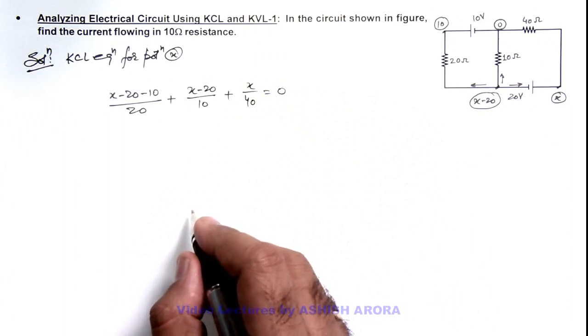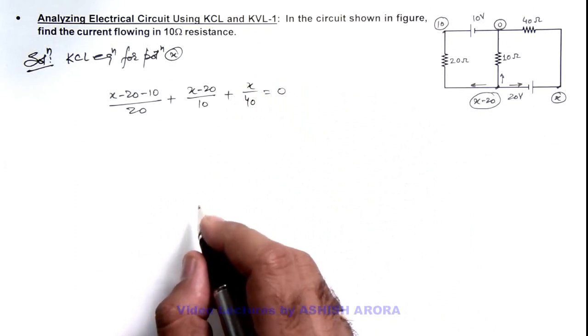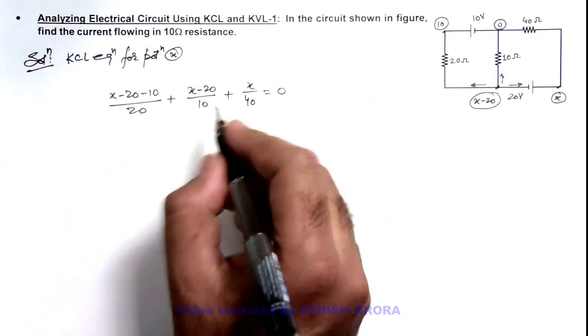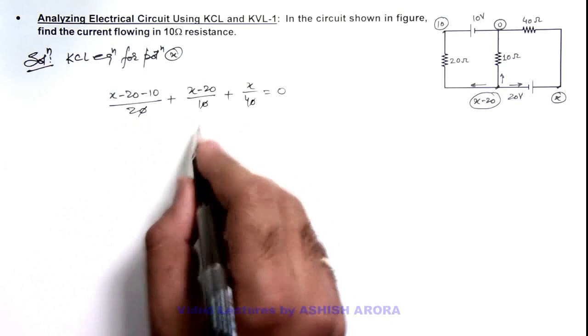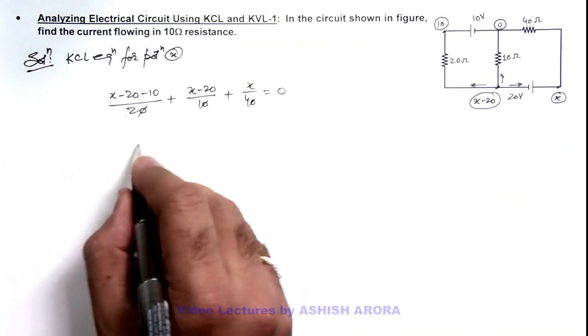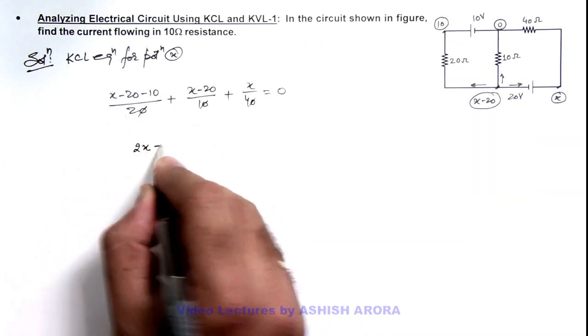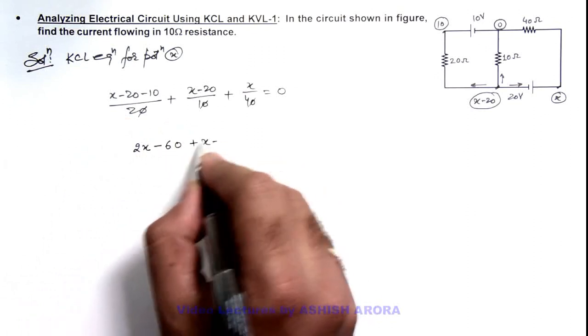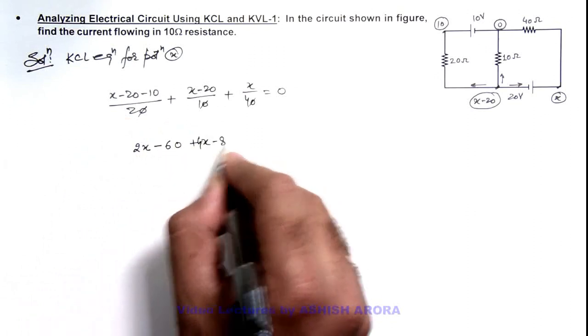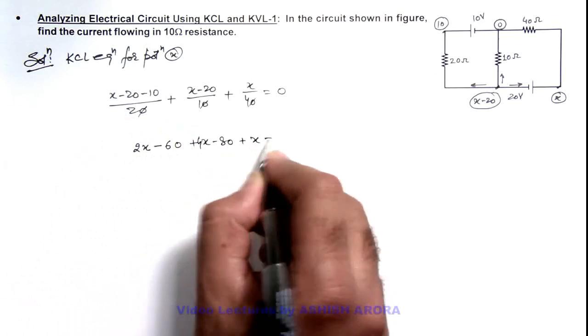So in this situation if we calculate the value of x in this case, we can see on simplifying this we are taking LCM as 4. So this will be 2x minus 60 plus x minus, plus 4x minus 80 plus x is equal to zero.